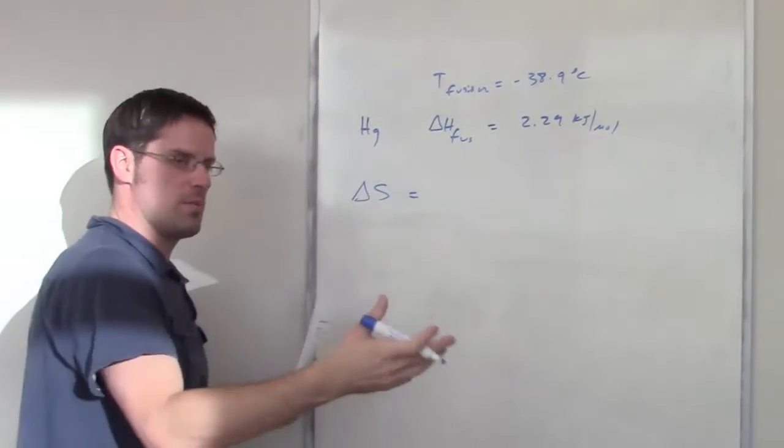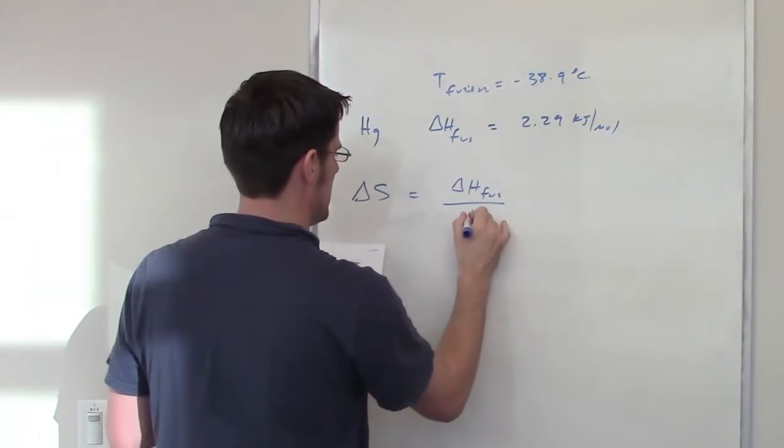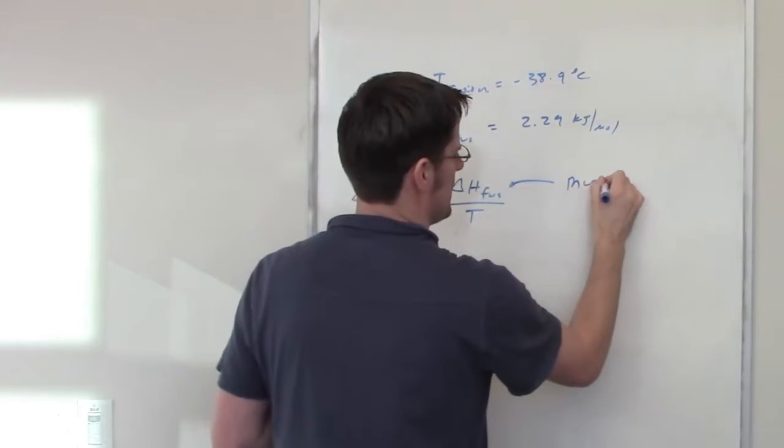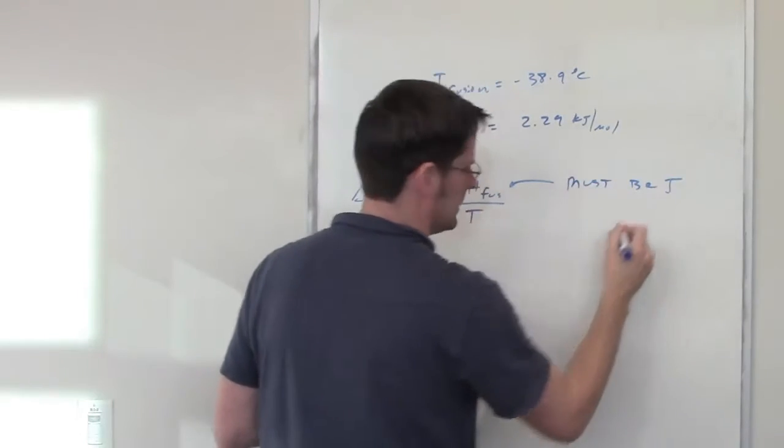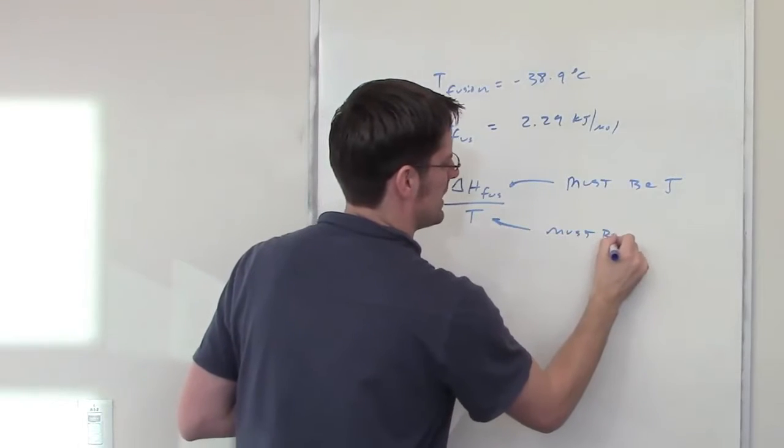And delta S, we should remember from the lecture, is equal to delta H of fusion divided by T. Delta H of fusion has to be in joules, must be joules, not kilojoules, not anything else, and T must be in kelvins.